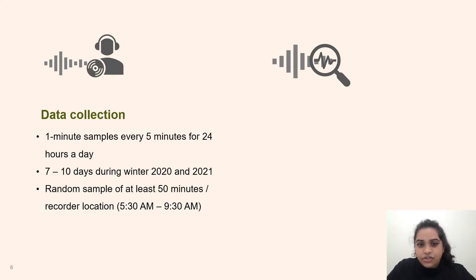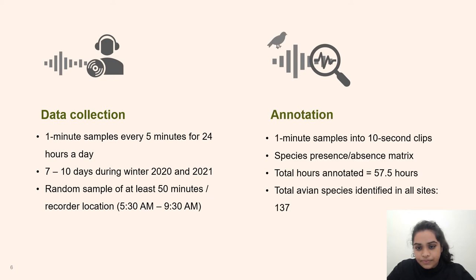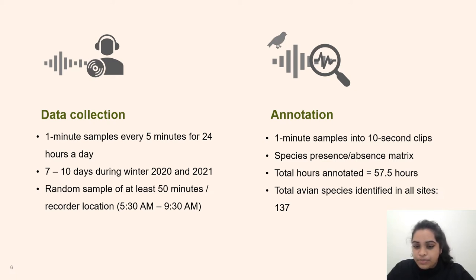We collected data in the form of one-minute samples every five minutes throughout a day using Audiomoth acoustic recorders, over a period of seven to ten days during winter 2020 and 2021. We then selected a random sample of at least 50 minutes per recorder location during the dawn hours, 5:30 am to 9:30 am. Manual data annotation was performed by dividing the one-minute samples into 10-second clips, and authors Siddhartha and Pravar manually investigated each clip to mark the presence or absence of species, resulting in a species presence-absence matrix. In total, we annotated 57.5 hours and identified 137 avian species across all sites.